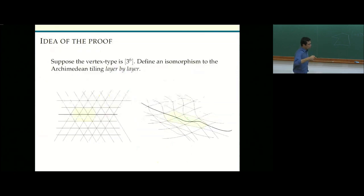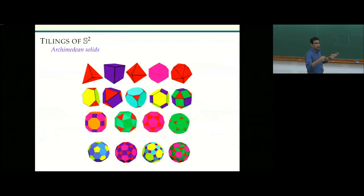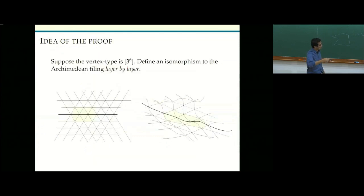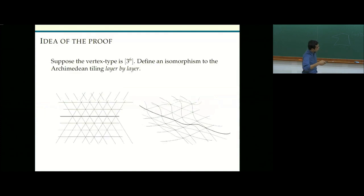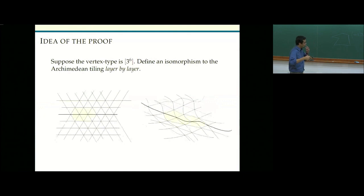You see that the whole line gets laid out, then you go to the next line, and so on. There's some kind of explicit layer-by-layer isomorphism. I mentioned this because this is what got me interested, and I asked the obvious question: what happens for the hyperbolic plane?